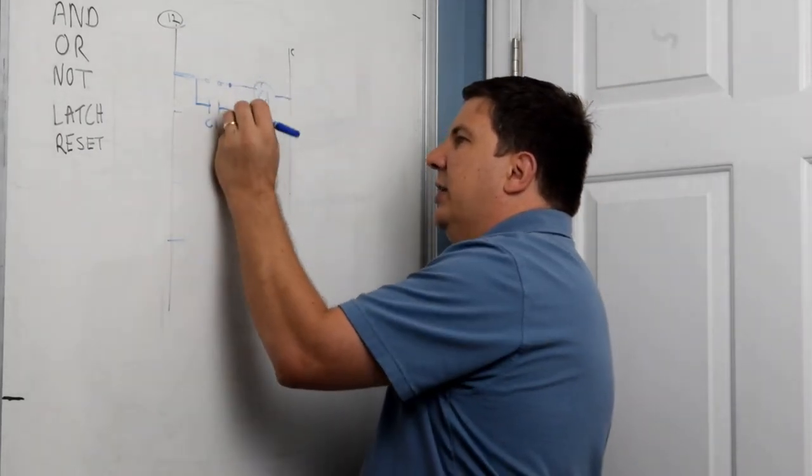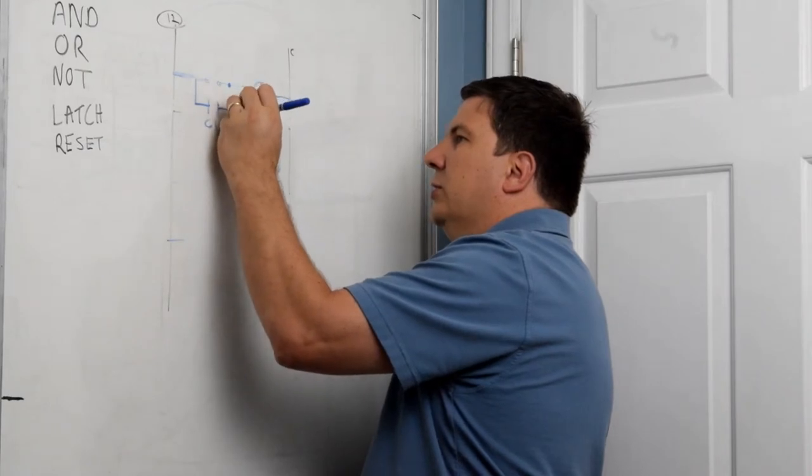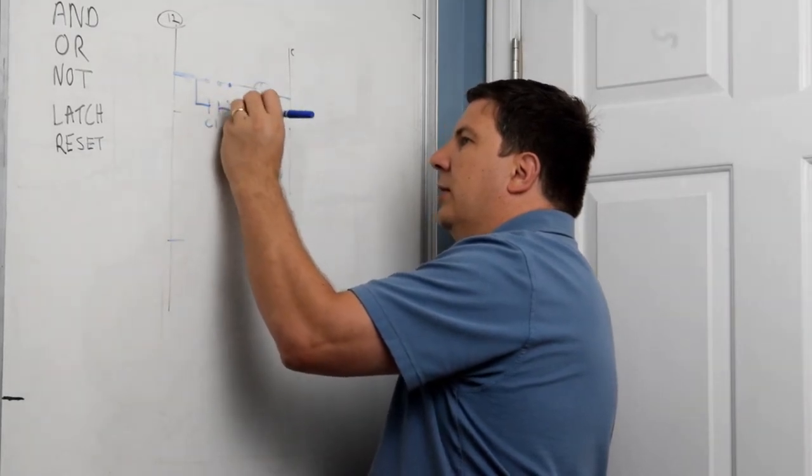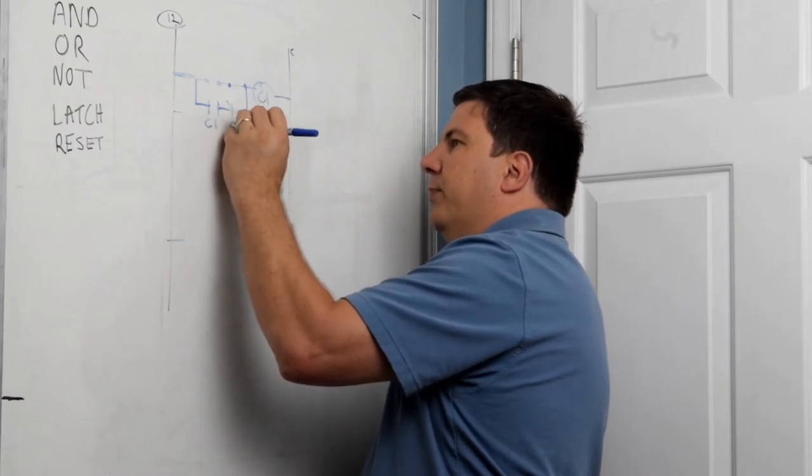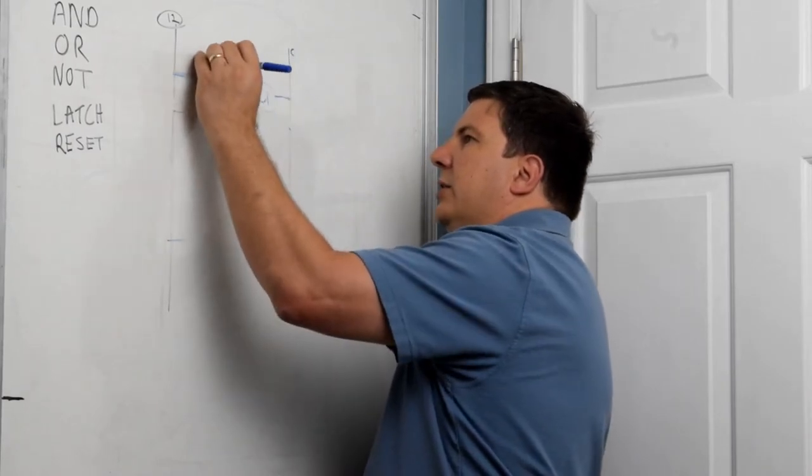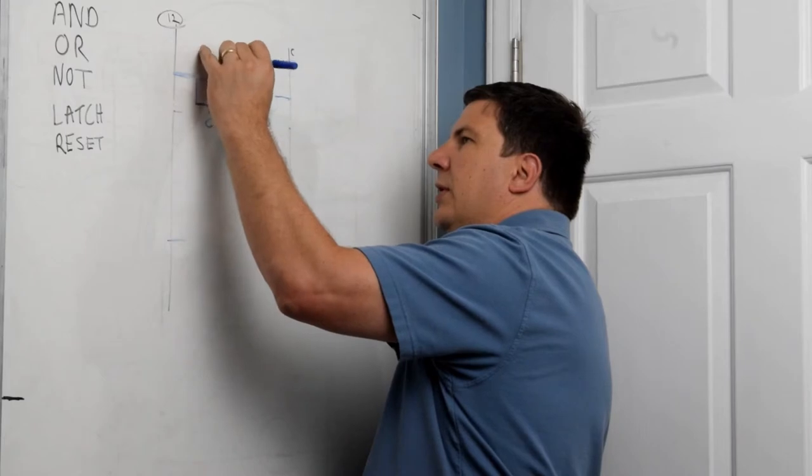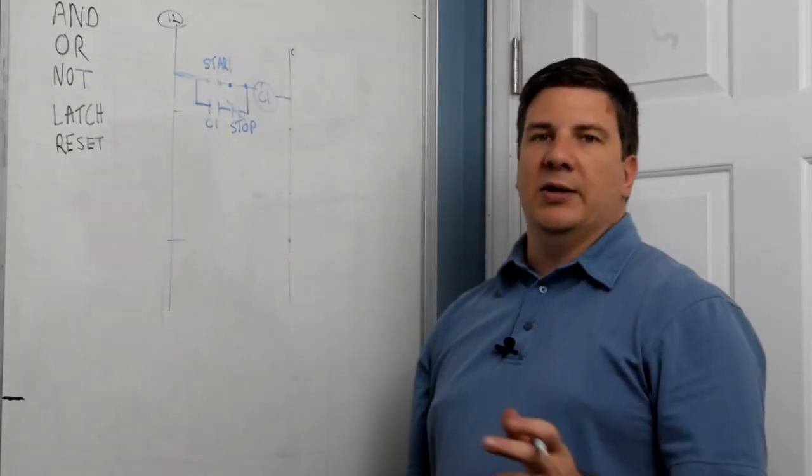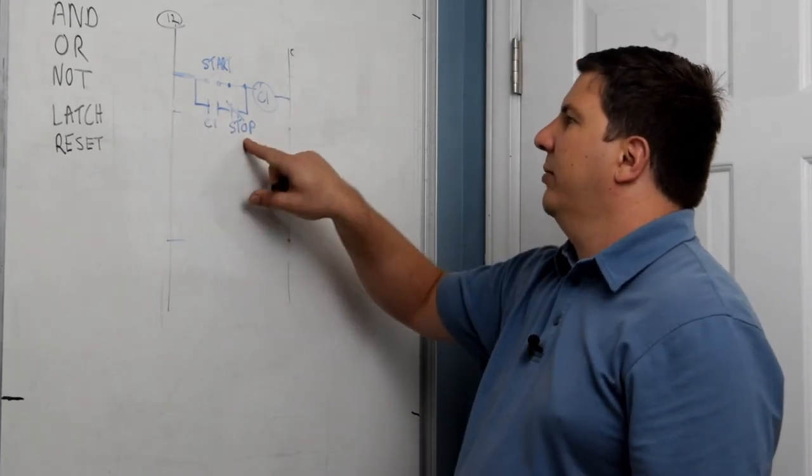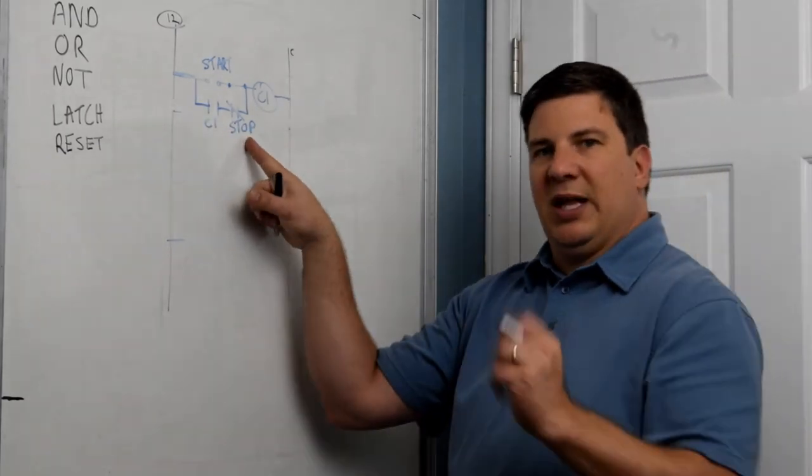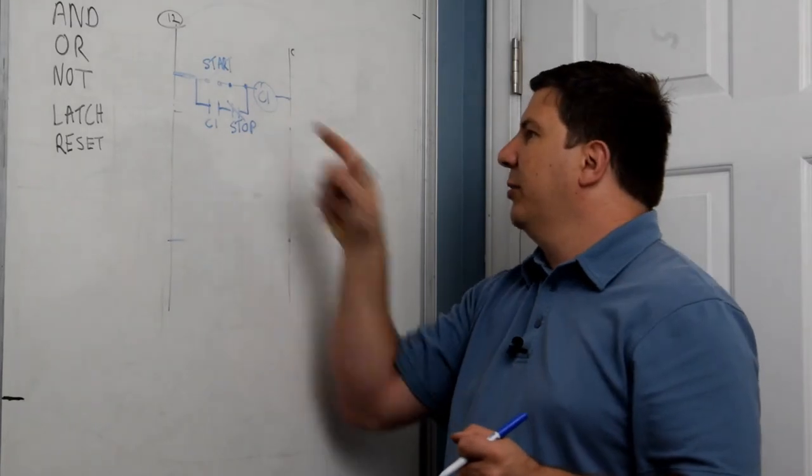So I'm going to take this off right here. I'm going to put a normally closed right there and that's going to be my stop and start. That's how I do it. I'm latching with C1 and I'm using my stop to interrupt that latch to stop the motor.